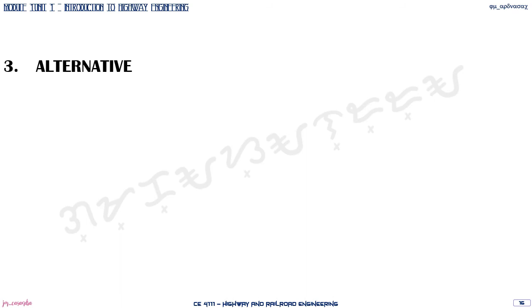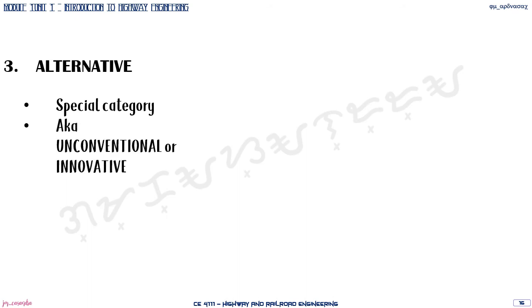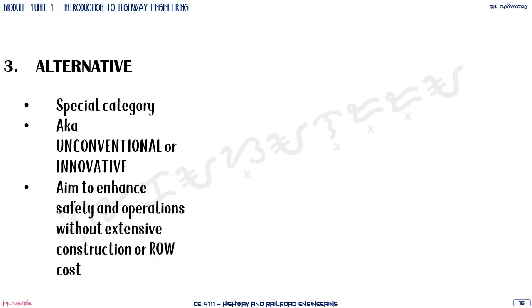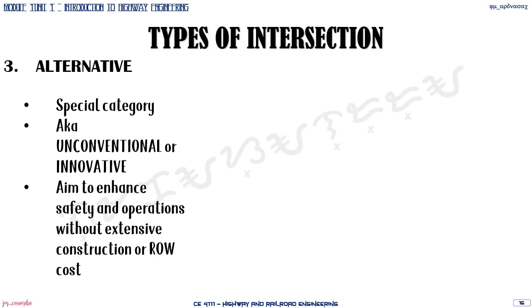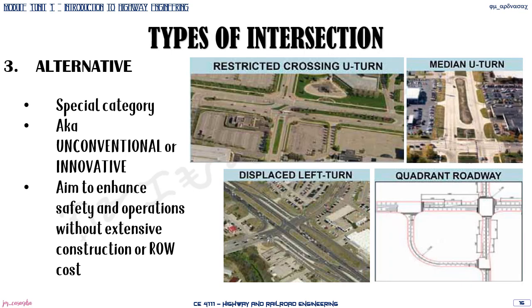The last type of intersection is alternative intersections, also known as special, unconventional, or innovative intersections. These aim to enhance safety and operations without extensive construction or right-of-way costs — if it is difficult to fix an existing highway and we want to add an intersection, we can use these alternatives. There are four types: the restricted crossing U-turn, the median U-turn, the displaced left turn, and quadrant roadways. These are more complicated intersections.